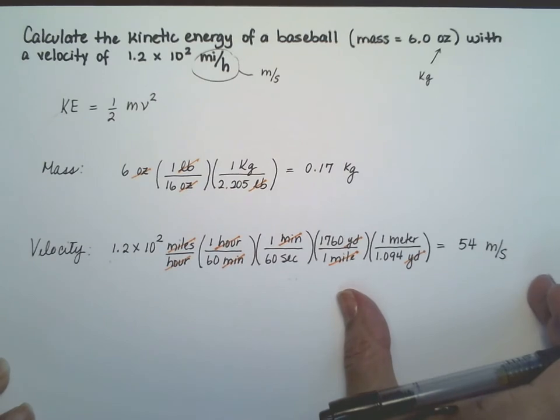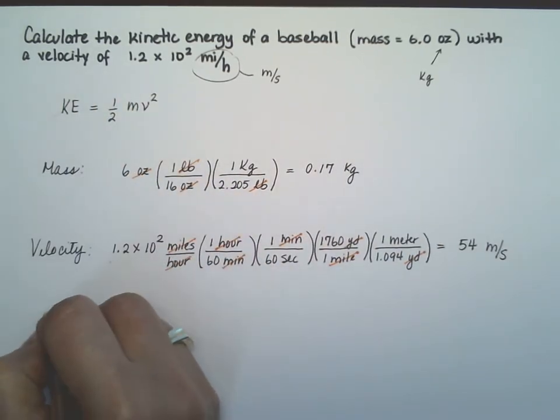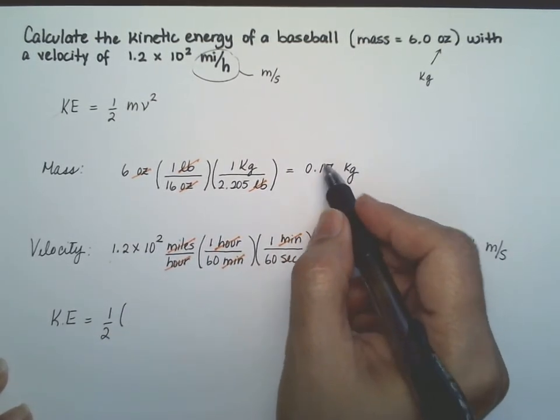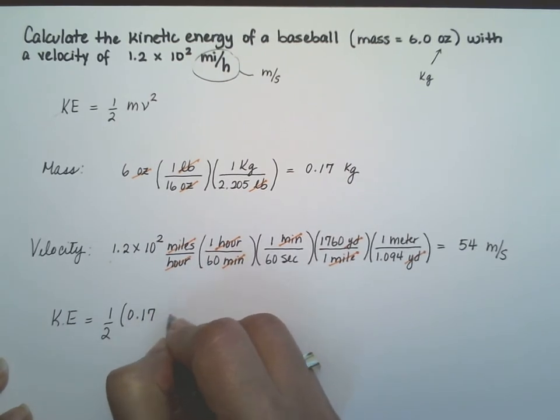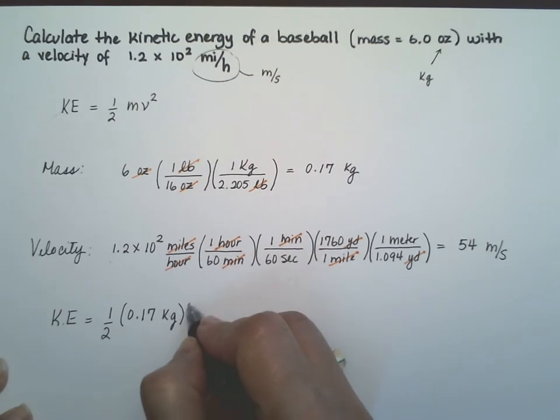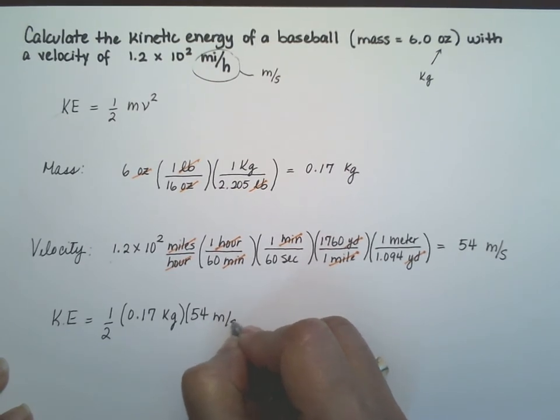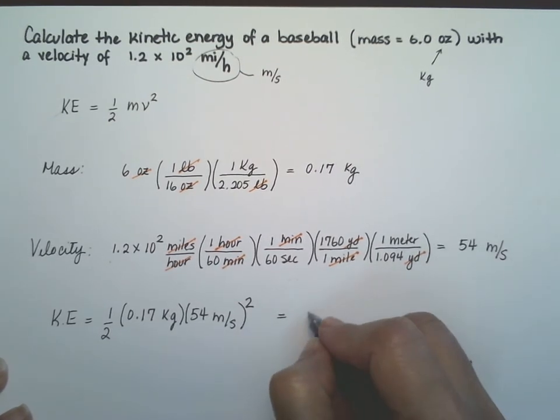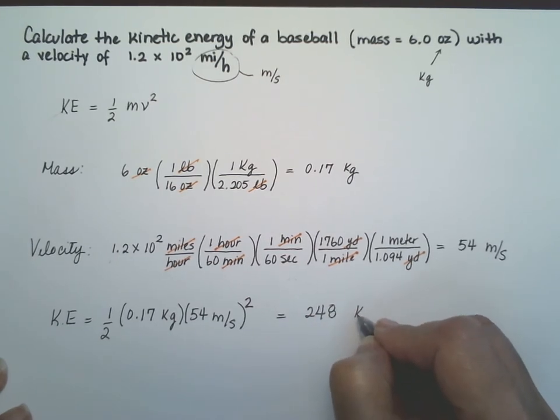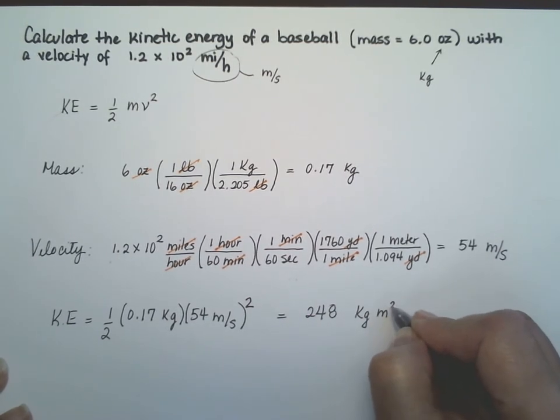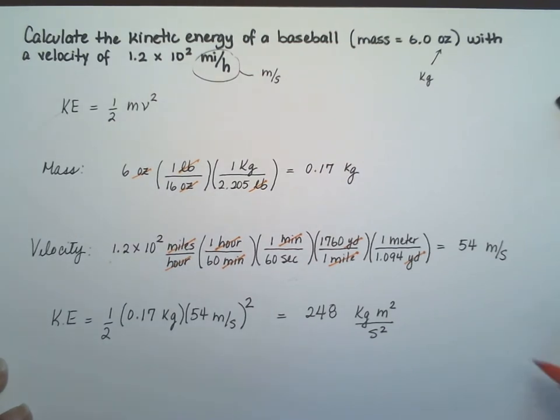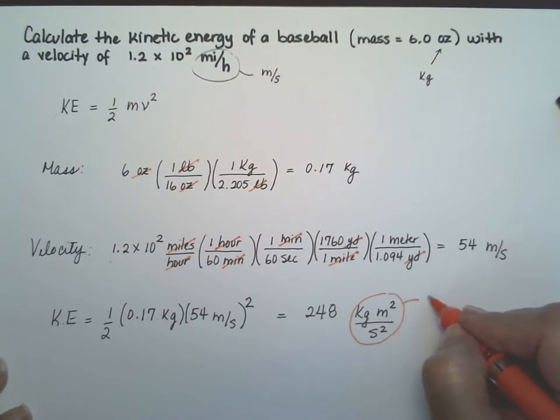Now all I have to do is take these two numbers and put them in my formula for kinetic energy. So it's half, don't forget the half, 0.17, I'm going to use my units. I want to see you use units as well. And the 54 meters per second, that has to be squared. So put all that into your calculator, and it's 248 kilograms meter squared per second squared. And this right here, this is the definition of a joule.